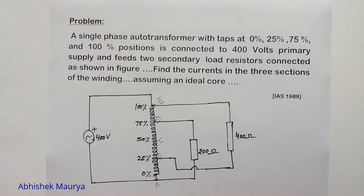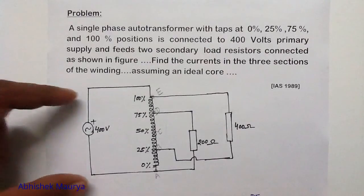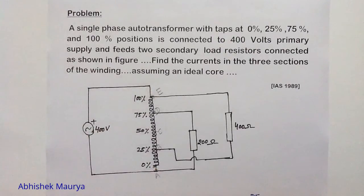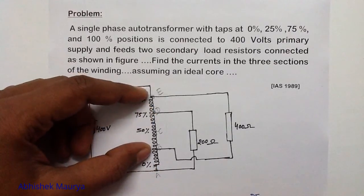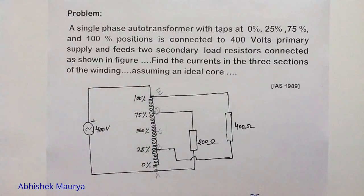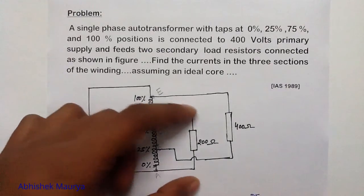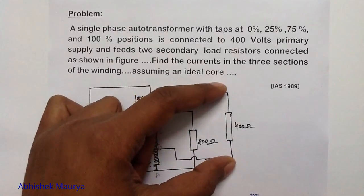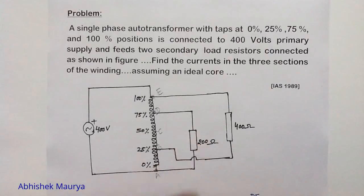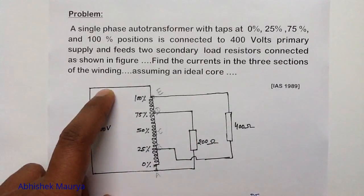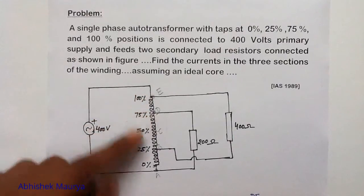In summary: 400V applied across 100% of the winding gives 300V across 75% of the winding — available between points D and A, and between E and B. This gives 300V across both the 200Ω and 400Ω resistors, yielding currents I2 and I3. Using the complex power balance technique we found I1, and then applying KCL at points E, D, and B, we calculated the currents in each of the three winding sections.